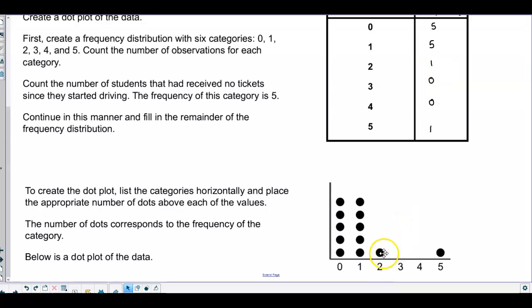For two, we have one dot. For three, we don't have any because there aren't any zeros. For four, there's zero. And then for five, there is one.